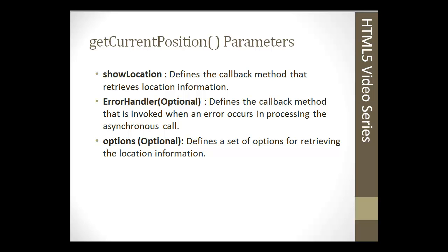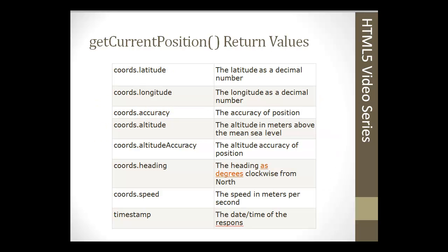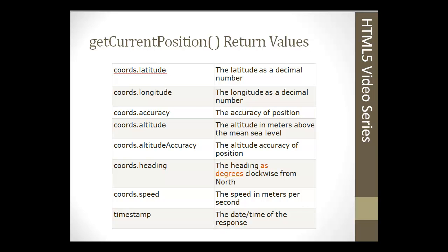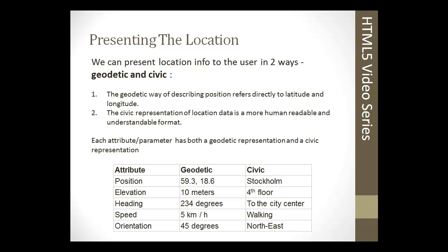These are the `getCurrentPosition` possible return values: latitude and longitude as decimal numbers, the accuracy of the position, the altitude, the heading, the speed, and the date and time of the response. Once we successfully obtain the user's position, we want to present it to them, and we can do that in two ways.